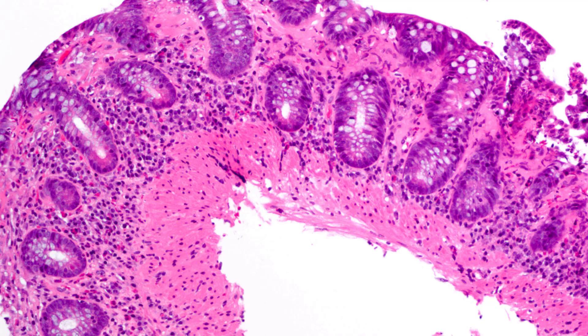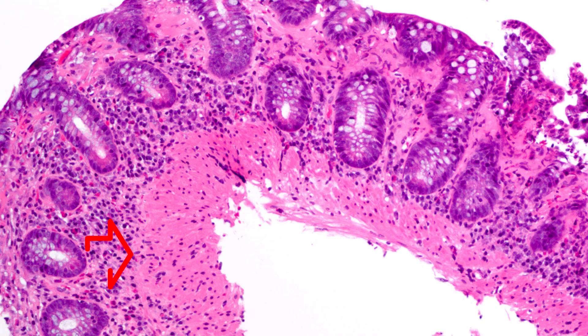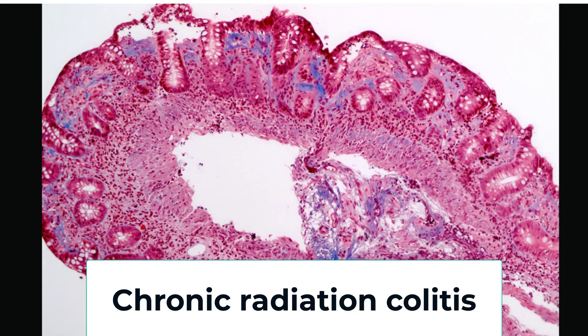Here is one final mimic. The mucosa looks a little thin, there is some thickened collagen in the upper half of the mucosa, perhaps some basal plasmacytosis and foreshortening, but the crypt architecture is largely intact. And look at the amount of collagen — this is way above what you would see with collagenous colitis. This is not chronic colitis — this is chronic radiation injury, another mimic of inflammatory bowel disease and chronic colitis.